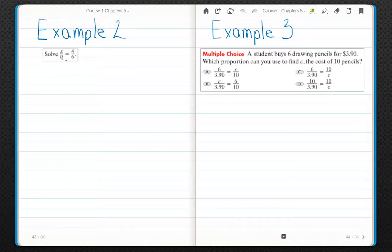Solve X over 9 equals 4 over 6. So I'm going to start by rewriting my problem. Oh, just kidding. X over 9 equals 4 over 6. 4 over 6.